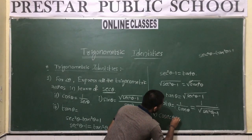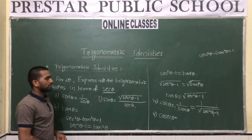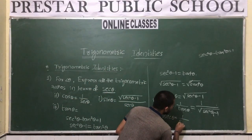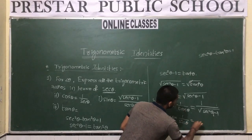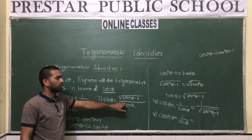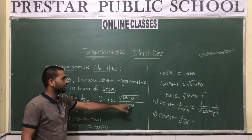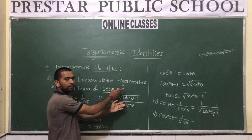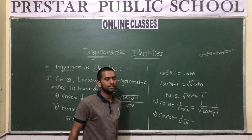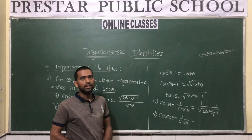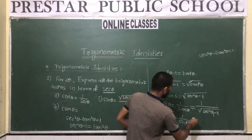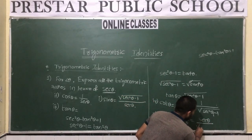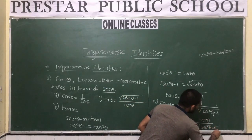The last ratio is cosecθ in terms of secθ. cosecθ is the reciprocal of sinθ, so cosecθ = 1/sinθ. We know sinθ = √(sec²θ - 1)/secθ, so exchanging numerator and denominator, cosecθ = secθ / √(sec²θ - 1).